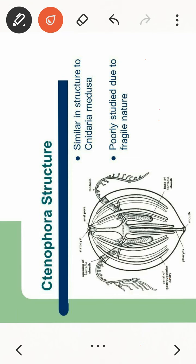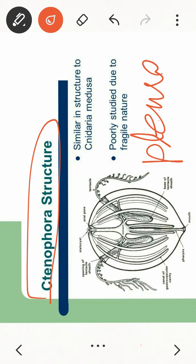So students, here you can see the ctenophora structure. You can see one organism here that is called Pleurobrachia. Pleurobrachia is called comb jelly.